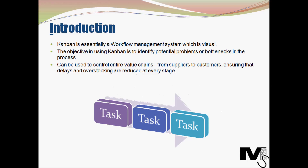Kanban is a visual method of managing a process and the actual work done in the process. It is essentially a visual workforce management system. The objective in using Kanban is to identify potential problems or bottlenecks in the process and fix them on time to ensure optimal resource utilization.